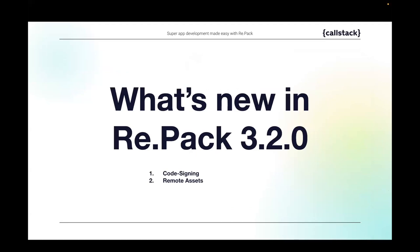Next on our agenda is what's newest and greatest in Repack 3.2.0. About two weeks ago we released the final version of 3.2.0, preceded by two release candidates where we tweaked the APIs. The two main features of this release are code signing and remote assets. Let's start with code signing, which is really important especially in big enterprises where security has to come first.